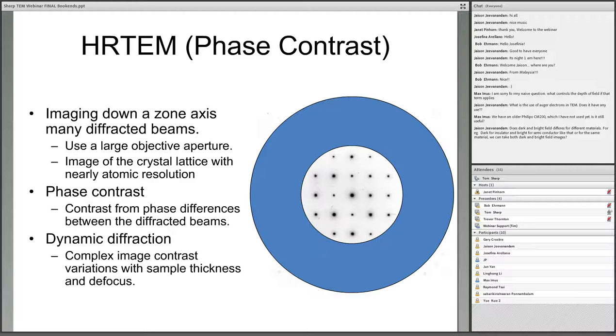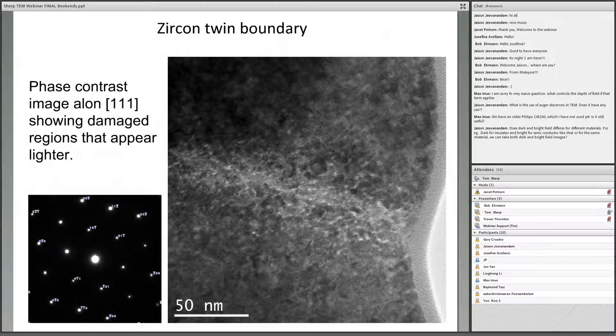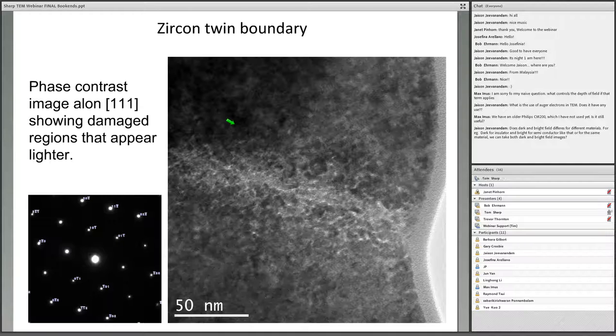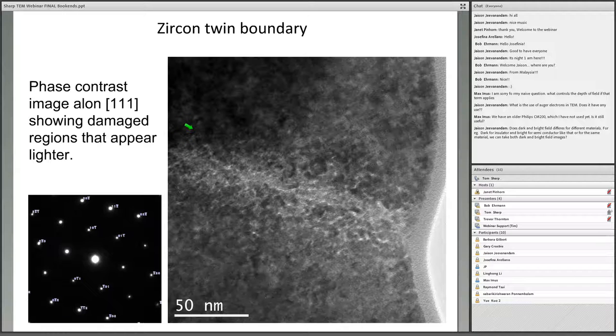The image we get is produced by the phase differences of all these reflections that we include in the image. That's why it's called phase contrast. It's an image of the electron wave that's exiting the sample. Because the diffraction is dynamic and there's lots of interactions, the images themselves are complex functions of sample thickness and focus. I'm going to show you a couple of examples. These are some images I took a couple of months ago. This is the mineral zircon. I'm interested in the structure of the twin boundary.